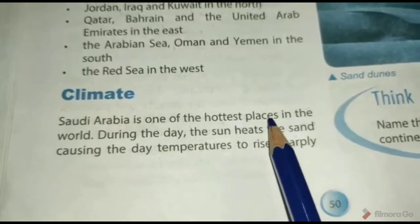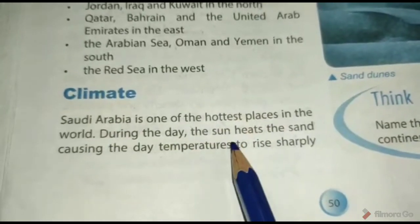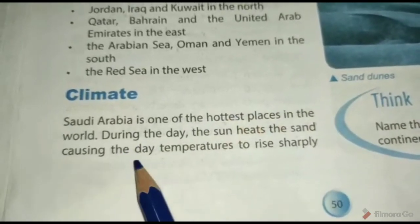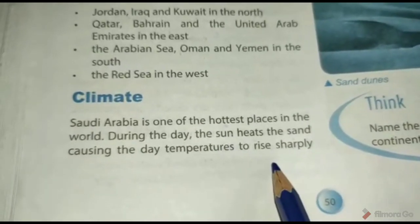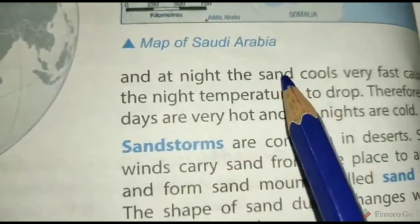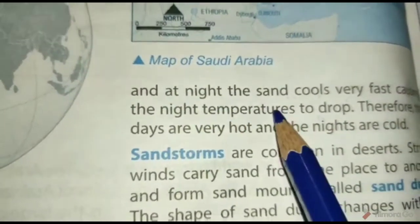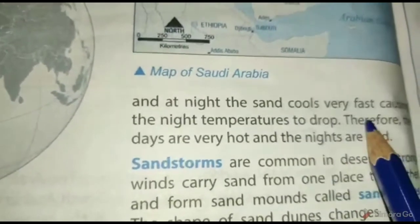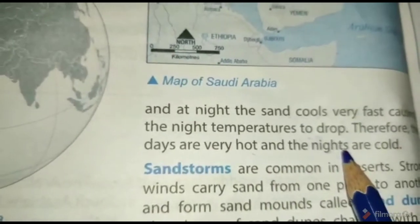Saudi Arabia दुनिया की सबसे गर्म जगहों में से एक है। दिन के समय sun, sand यानी रेत को बहुत जल्दी गर्म करता है जिससे कि दिन का temperature तेजी से बढ़ता है। रात को रेत बहुत तेजी से ठंडी होती है जिससे रात का temperature बहुत कम हो जाता है। इसलिए जो दिन होते हैं वो काफी गर्म होते हैं और रातें ठंडी होती हैं।